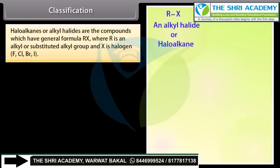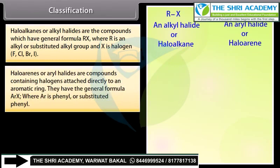Haloalkanes or alkyl halides are compounds which have the general formula RX, where R is an alkyl or substituted alkyl group and X is the halogen F, Cl, Br, or I. Haloarenes or aryl halides are compounds containing halogens attached directly to an aromatic ring. They have the general formula ArX, where Ar is phenyl or substituted phenyl.